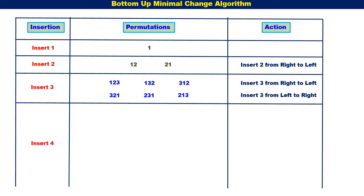After this, insert 4. 4 has to be inserted in all these 6 permutations, one by one. First, let us consider {1, 2, 3} — we have to start from right to left. Insert 4 from right to left. We get {1, 2, 3, 4}, then {1, 2, 4, 3}, then {1, 4, 2, 3}, then {4, 1, 2, 3}. You can observe 4 is moving from right to left. We get 4 permutations.